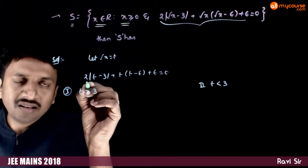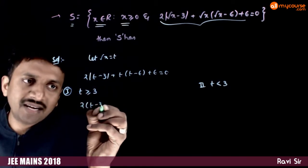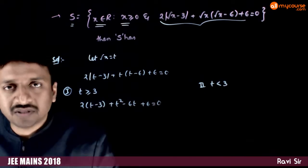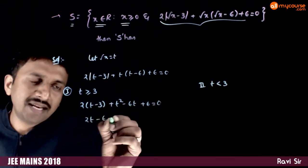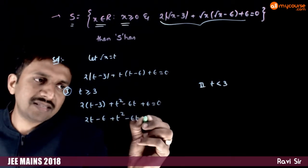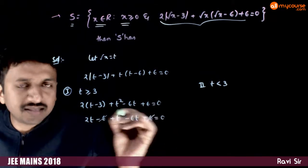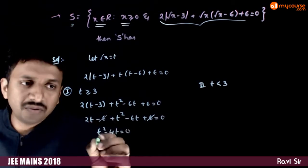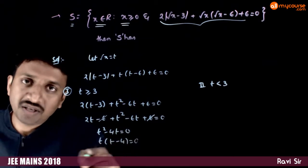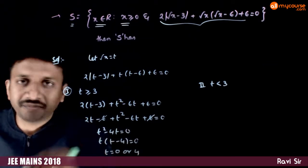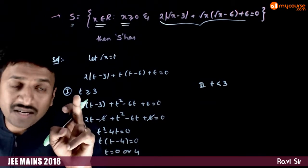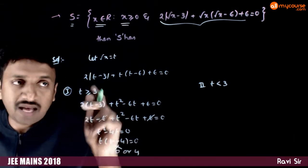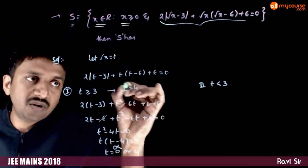When t ≥ 3, |t - 3| = t - 3, so the equation becomes 2(t - 3) + t² - 6t + 6 = 0, which gives t² - 4t = 0, so t(t - 4) = 0. Thus t = 0 or t = 4. Since we need t ≥ 3, t = 0 doesn't work, so t = 4 is one solution.